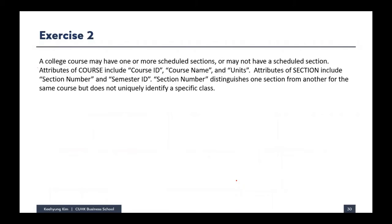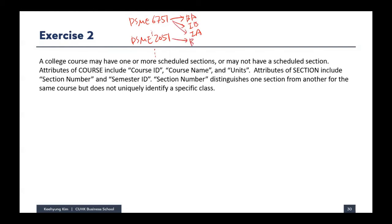Exercise two is similar. A college course may have one or more scheduled sections — it's about the relationship between course and section. There are multiple courses like DSME 6751 and DSME 2051, and there are also many different sections. For DSME 6751, we have a BA section, IAB section, IA section, and so on.